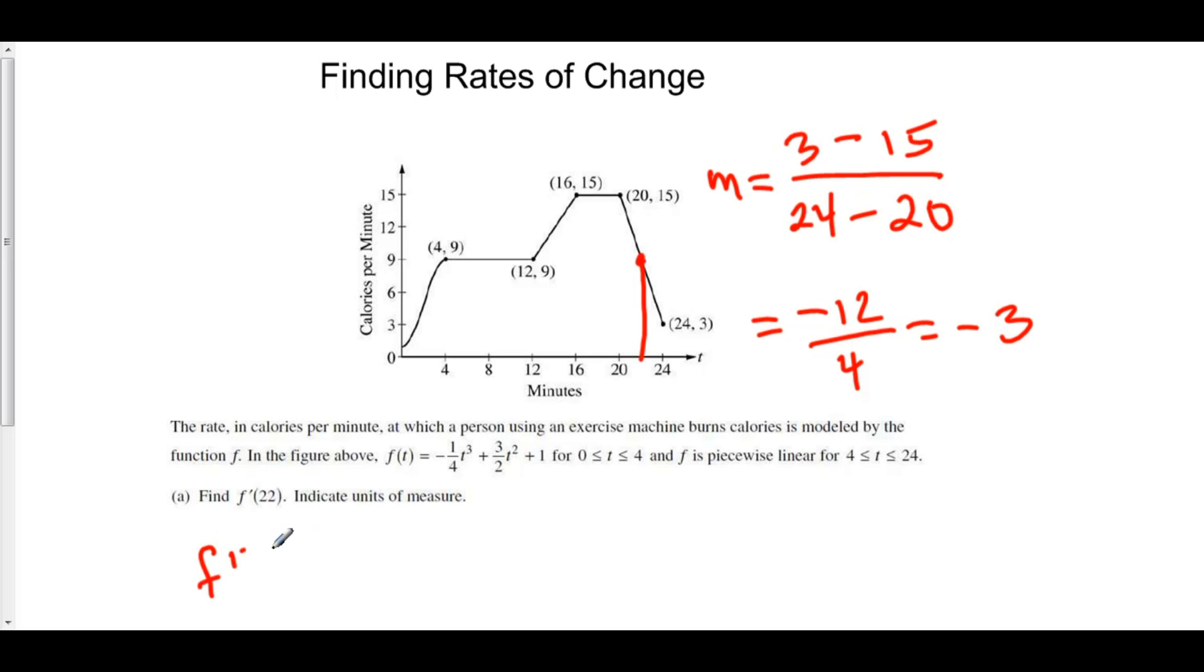So, f'(22) = -3 because the rate of change of f, the slope of f at this particular point, is negative three.